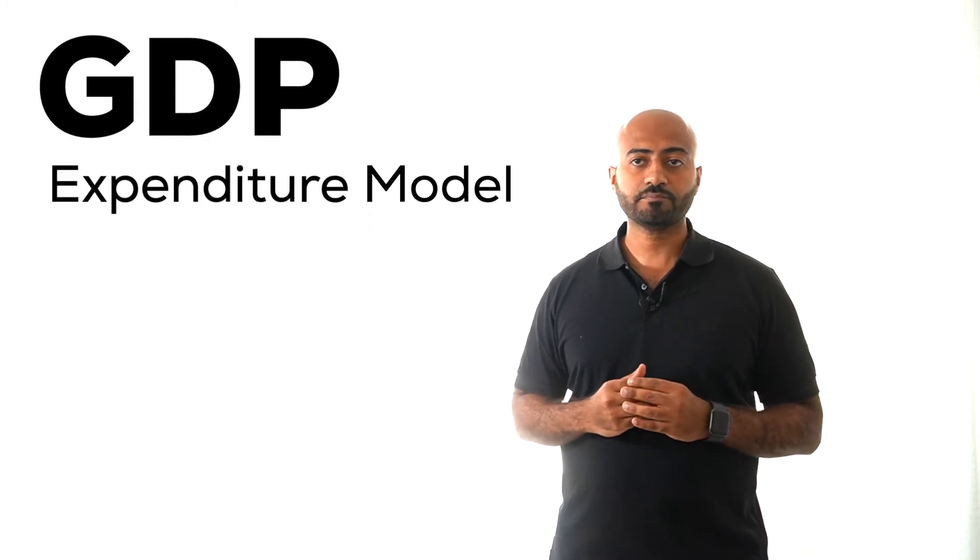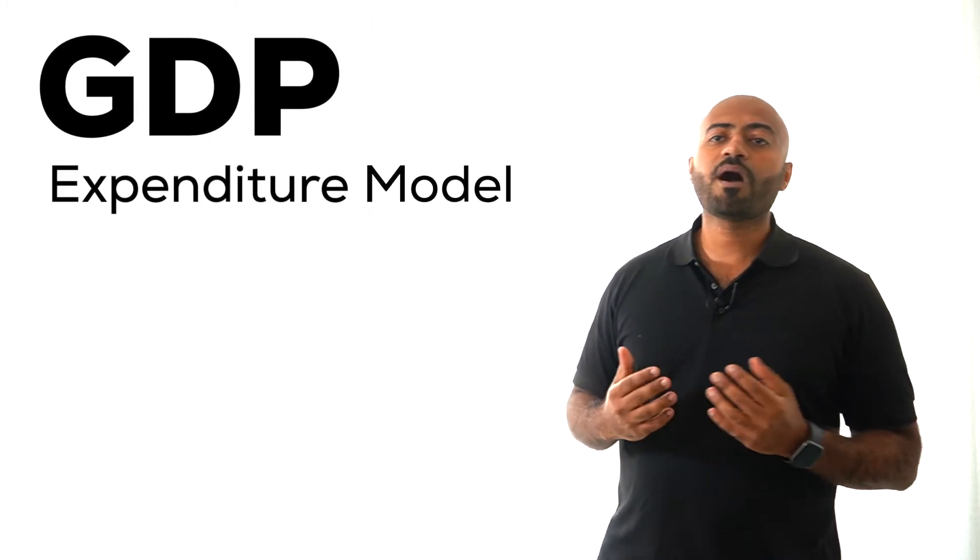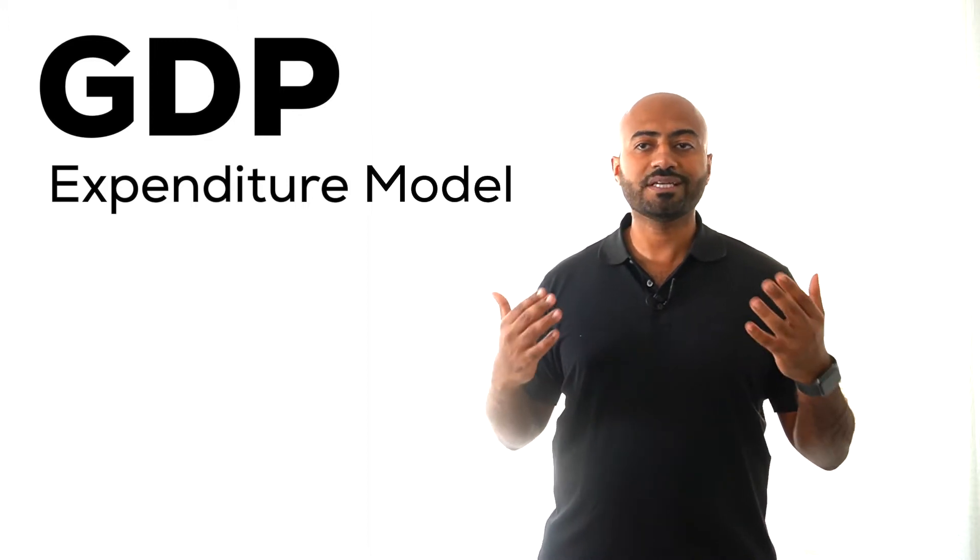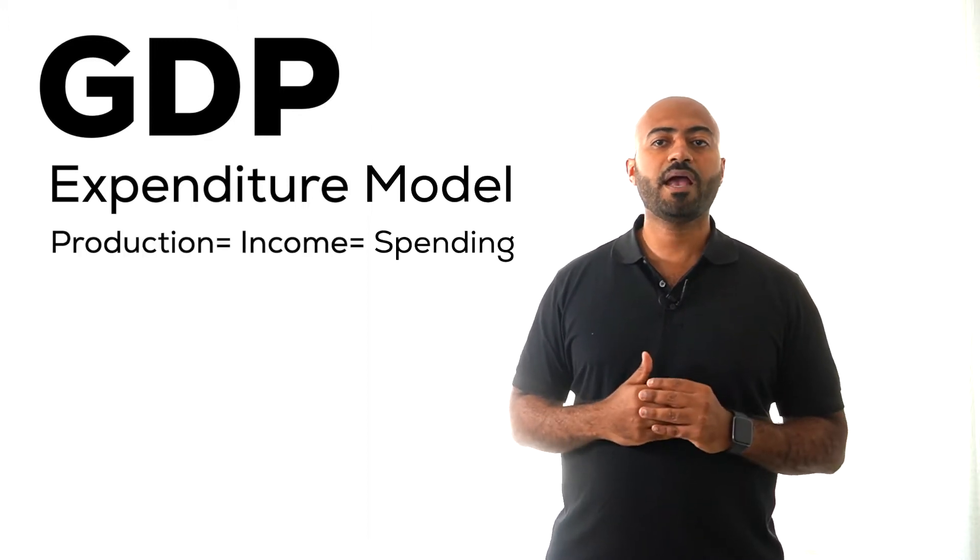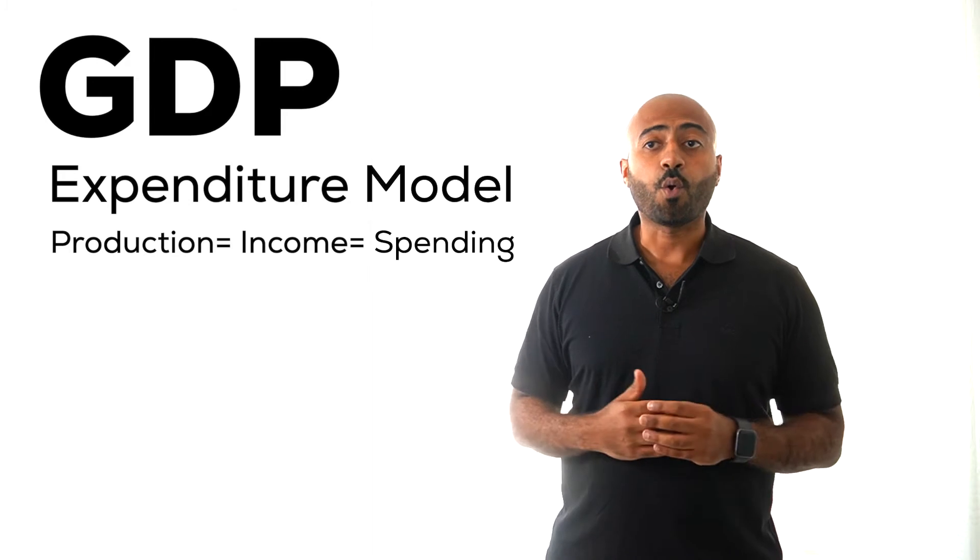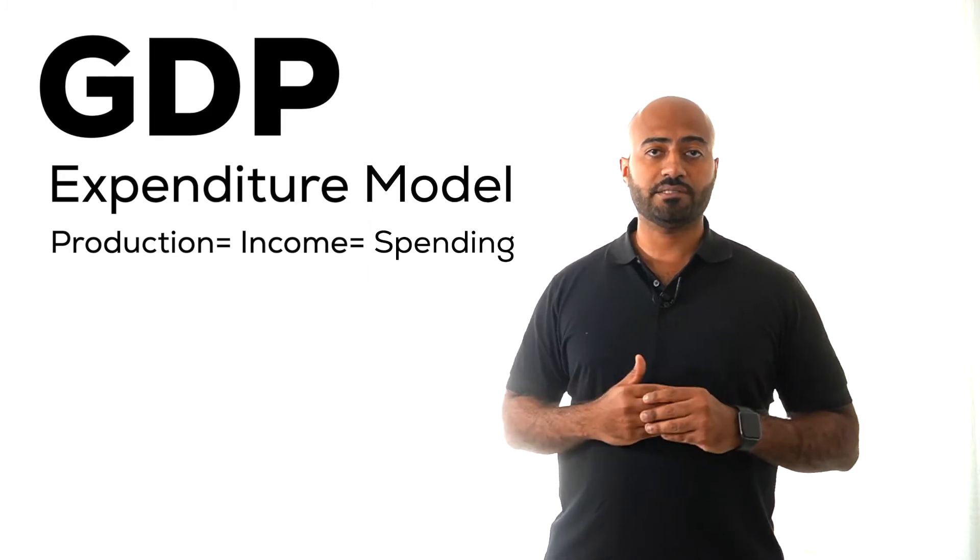In today's class, we will talk about another way to calculate GDP. The approach we will introduce today is called the expenditure model. The expenditure model relies on the assumption that what is produced generates income and therefore spending, or expenditure must have taken place.